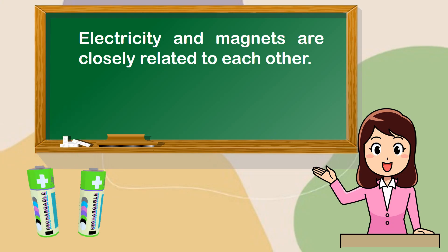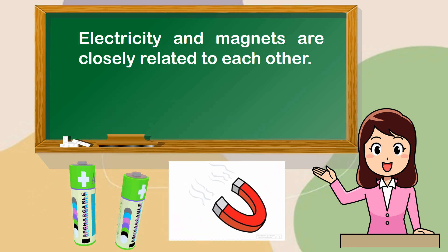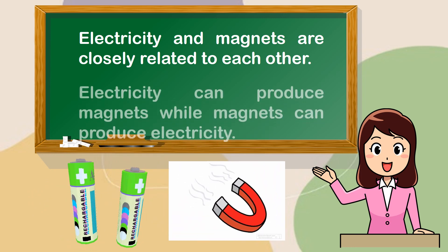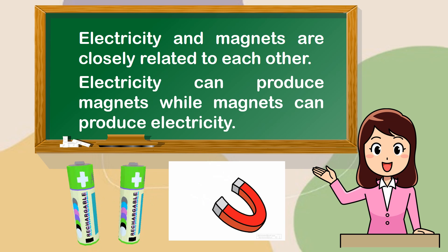Electricity and magnets are closely related to each other. Electricity can produce magnets while magnets can produce electricity.